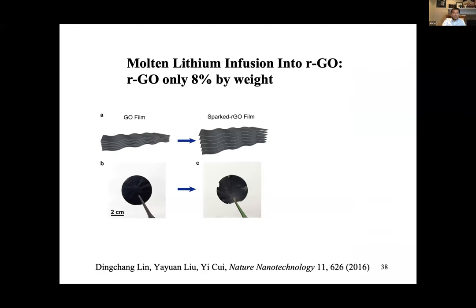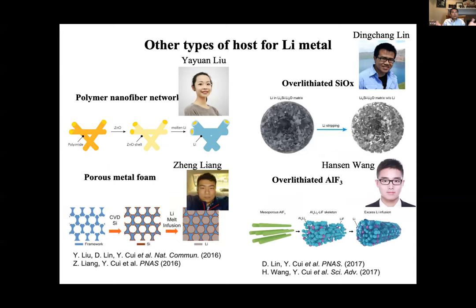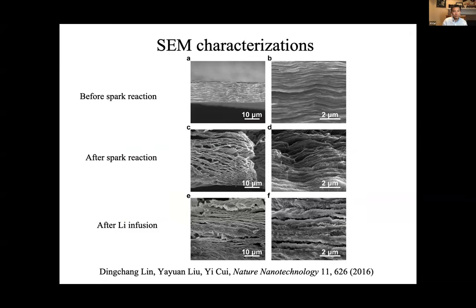The graphene oxide adds only about 8% dead weight, so the lithium capacity per unit weight and volume remains very high. Looking at the cross section, this really provides a stable host — you put lithium in and take lithium out without large volume fluctuation. The volume fluctuation can become essentially zero, enabling a stable solid electrolyte interface. We see a lot of stability gain through this material system.